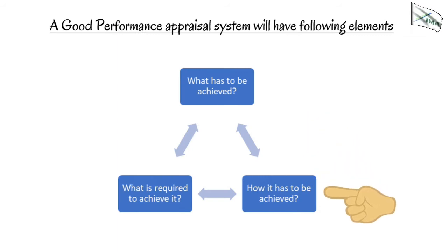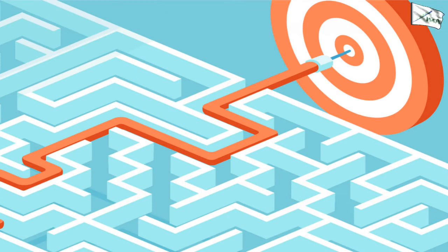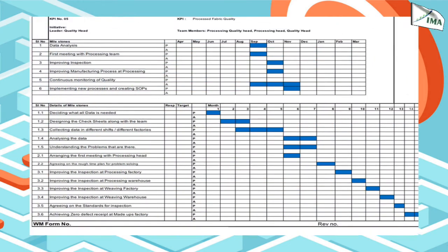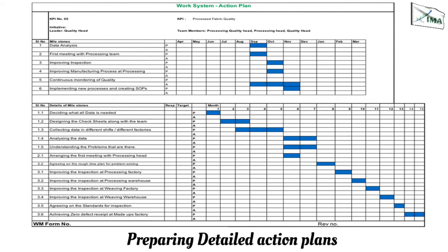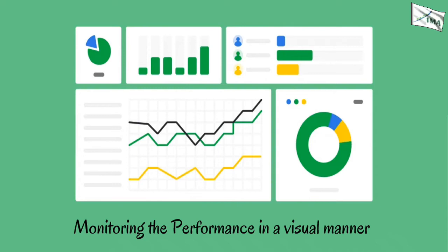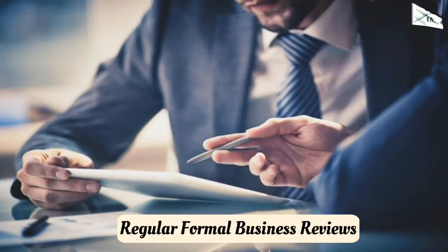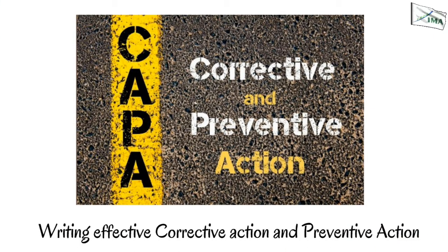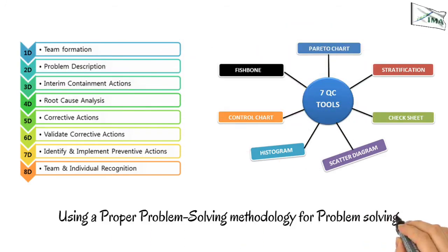How it has to be achieved: Usually a company would define the process using which the employees have to achieve these targets. This will comprise of preparing detailed action plans, monitoring the performance in a visual manner, regular formal business reviews, writing effective corrective action and preventive action, using a proper problem-solving methodology for problem solving, and so on.